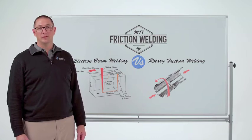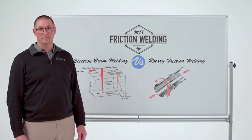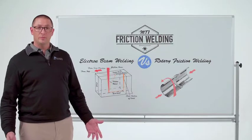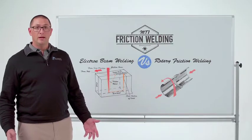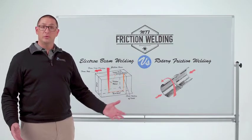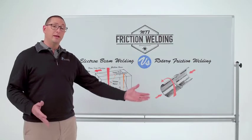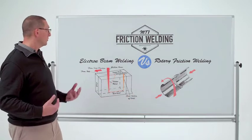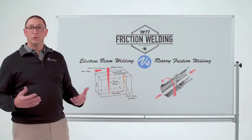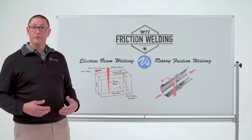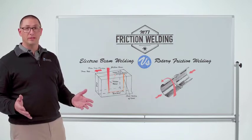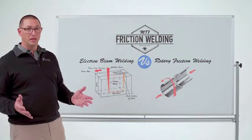Today we're talking about friction welding compared to electron beam welding. Friction welding — traditional friction welding — and electron beam welding compete against each other every once in a while, but there are some significant differences between the two.